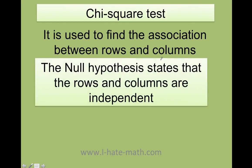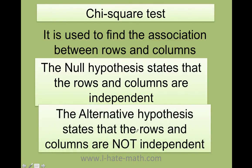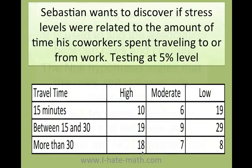So the null hypothesis is going to state that the rows and columns are independent. And the alternative is going to be that the rows and columns are not independent. Let's do an example.